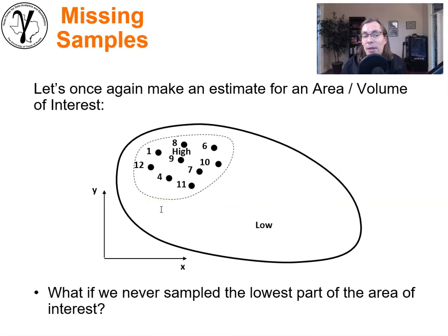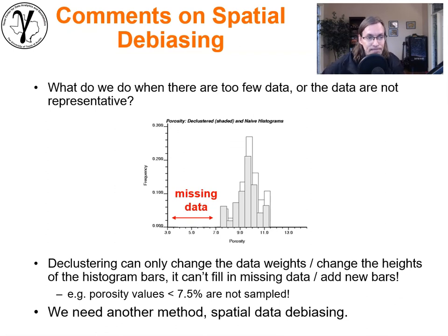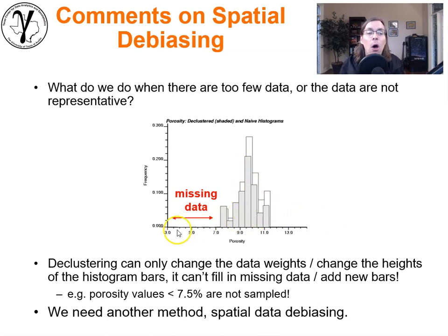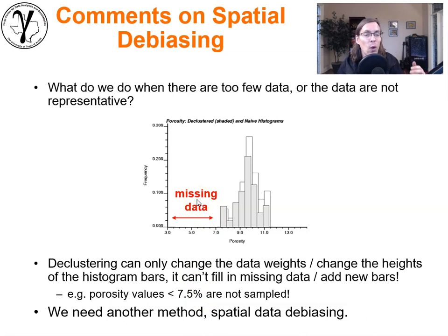This is our setting for the application of spatial debiasing. Declustering allowed you to weight the data — change the height of the bars, calculate the CDF, any sample statistic — but the only corrective mechanism was weighting of the data. What do we do when we're just missing data? In this example we have no porosity values less than 7.5 percent — it's just missing. In that case you can't weight your way out of this problem, you can't use cell-based declustering. We need another method: spatial data debiasing.